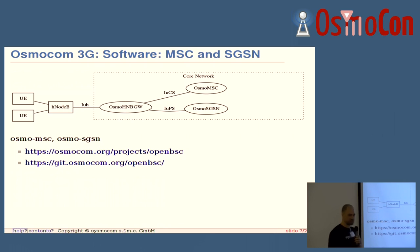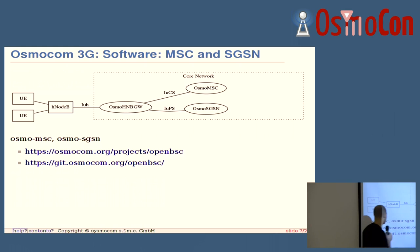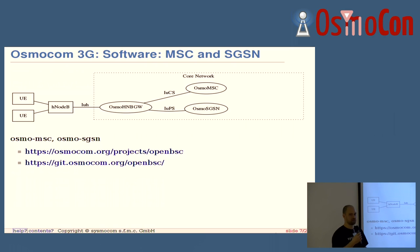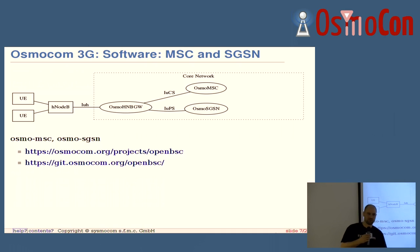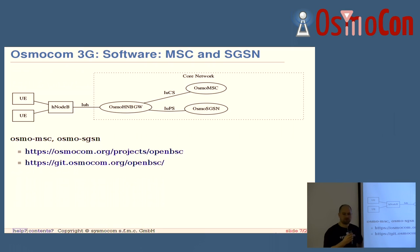So that's the OsmoMSC — the brand new entity we have. That's basically half the NITB without the BSC part. And the OsmoSGSN: where the MSC is for voice and signaling, the SGSN is for data. It's the same OsmoSGSN as for 2G; we've had it for a long time. We basically added the IuPS interface and then it starts working. Both are part of, so far, the OpenBSC project — the old name — and the main Git repository is sort of a kitchen sink. It has the OsmoMSC and the OsmoSGSN. On the master branch is of course the OsmoNITB, but on the VLR 3G branch it's already an OsmoMSC and there is no NITB anymore.